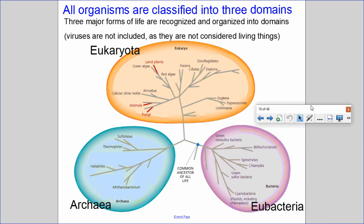Ultimately, all organisms can be classified into three domains — the three major forms of life recognized at the cellular level. Note that viruses are not included, as they are not considered living things.